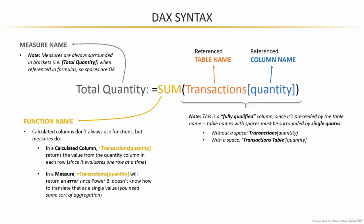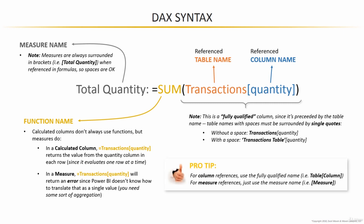One pro tip: when referencing columns, get in the habit of using the fully qualified name — table followed by column. But for measure references, just use the measure name itself. That's a nice easy way to differentiate column references from measure references within your DAX formulas, and it's a pretty good practice to follow.